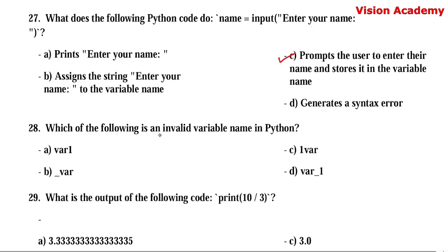Question number 28. Which of the following is an invalid variable name in Python? Option A: var1. Option B: _var. Option C: 1var. Option D: var1. As per the rules, a variable name must begin with either an alphabet or underscore. Option A begins with an alphabet — valid. Option B begins with an underscore — valid. Option D: var1 — allowed. Option C begins with a number — hence, this is an invalid variable name. Option C is the right answer.